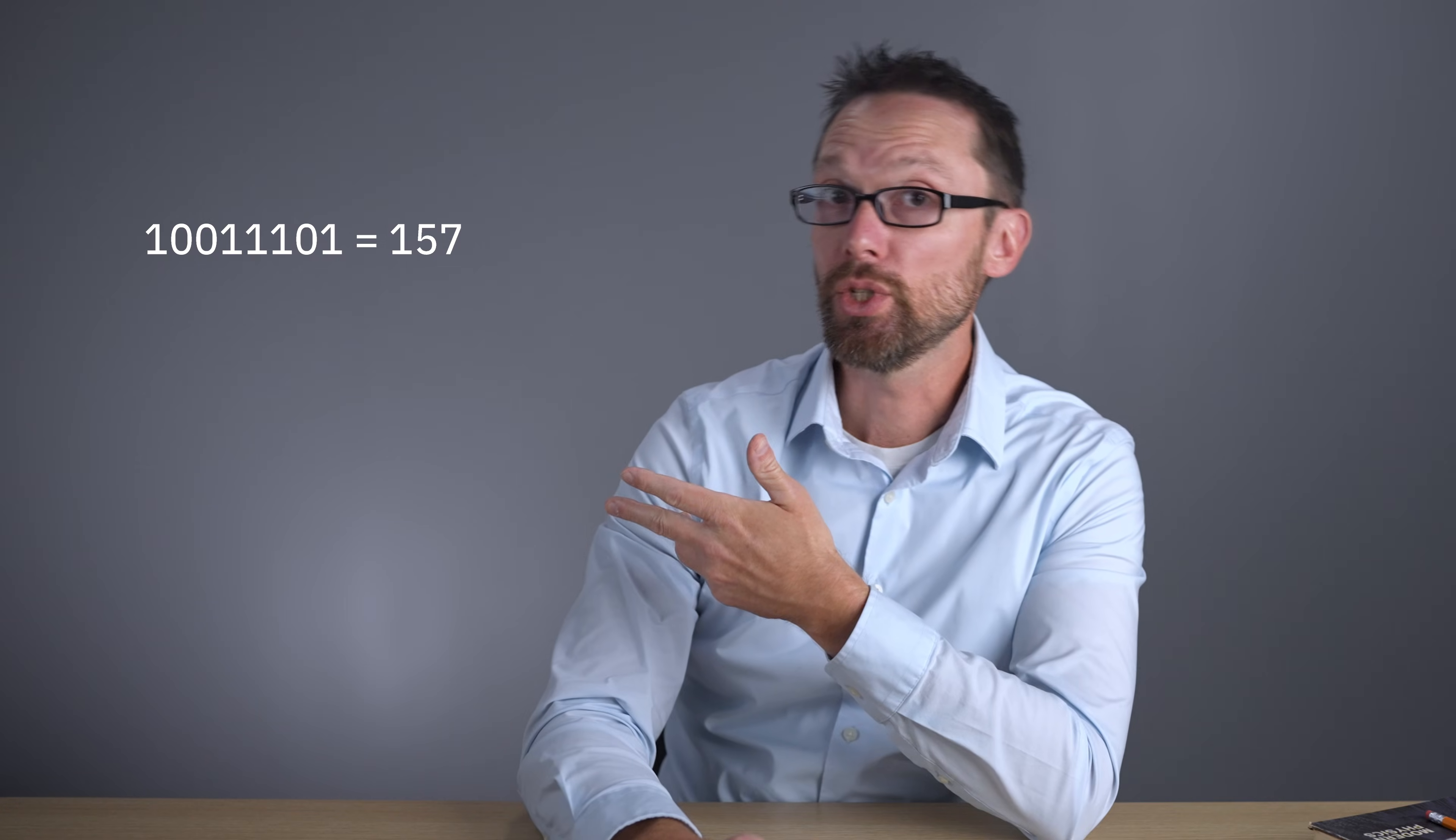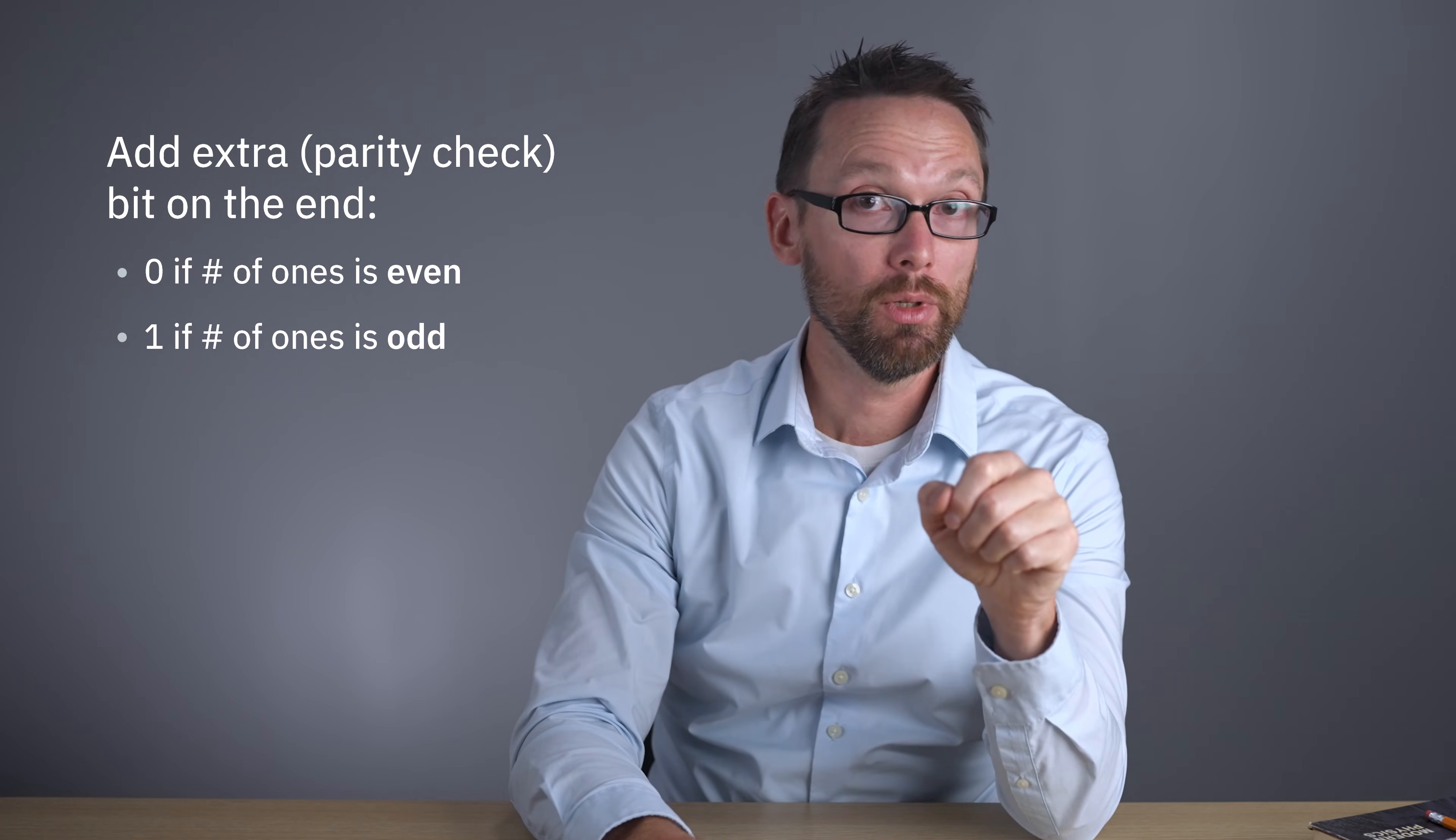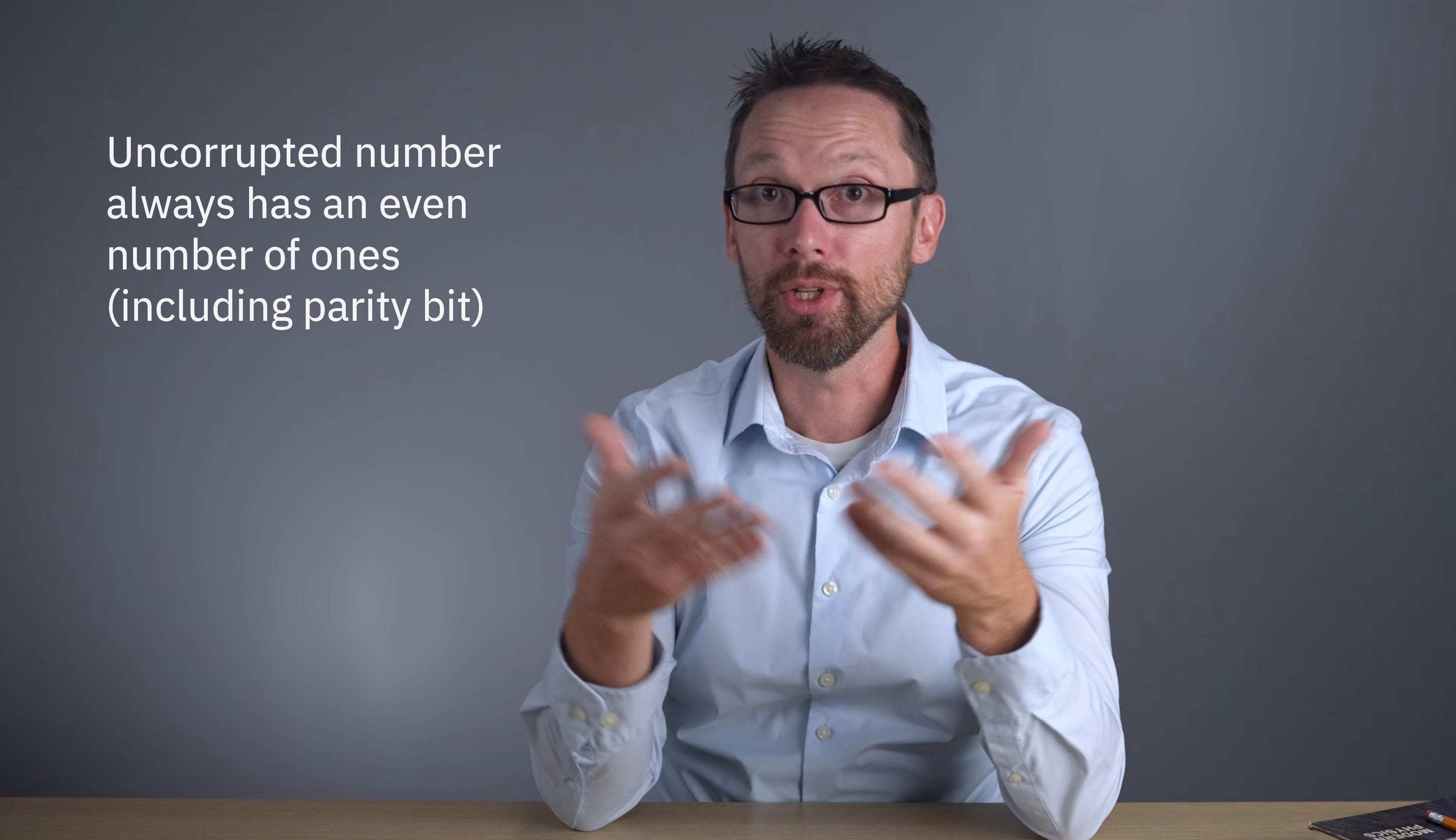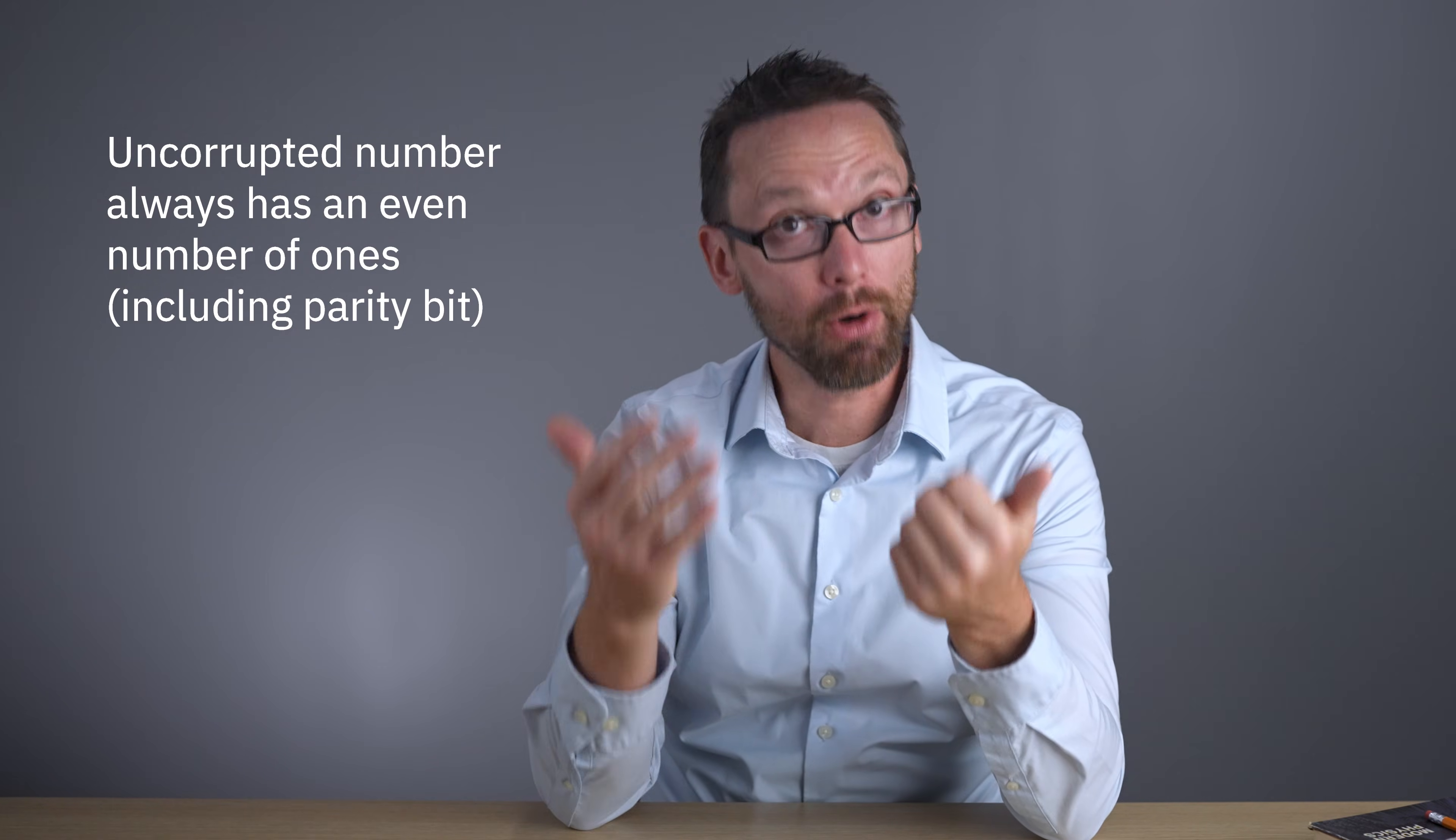As an example, consider that you might want to store an 8-bit number like this, which is 157 in binary. Now you add an extra bit on the end, a bit on which you store a 0 if the number of 1s in your encoded number is even, and a 1 if the number of 1s is odd. That way, an uncorrupted encoded string will always have an even number of 1s, including the parity bit.